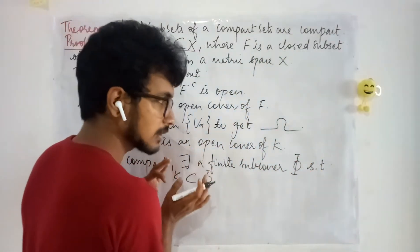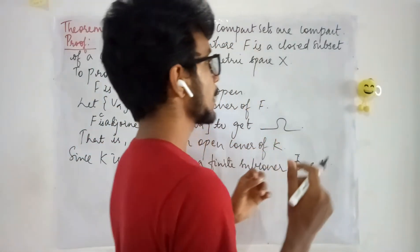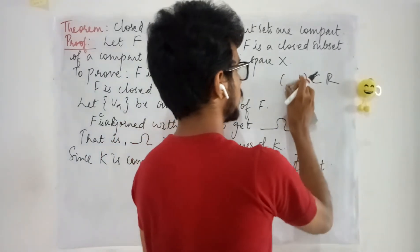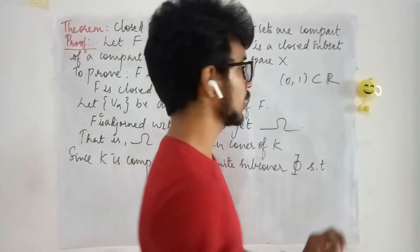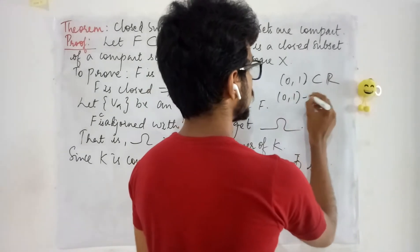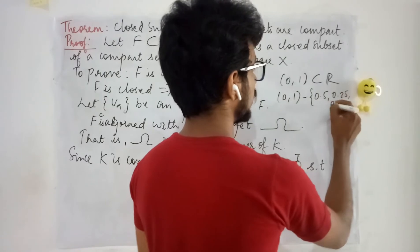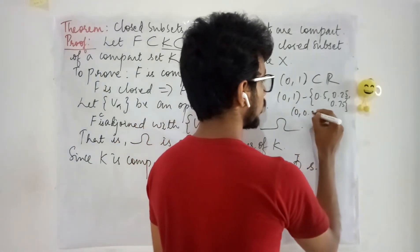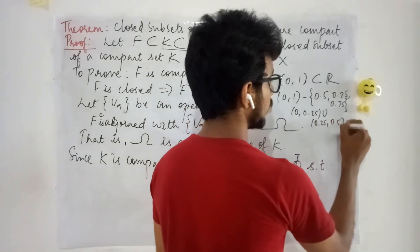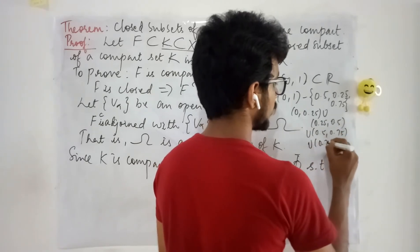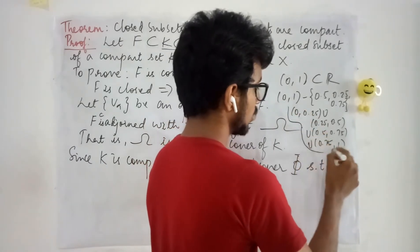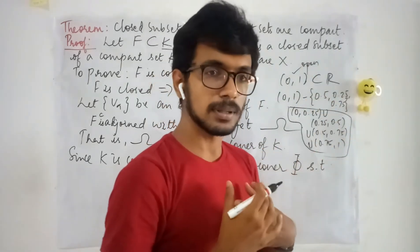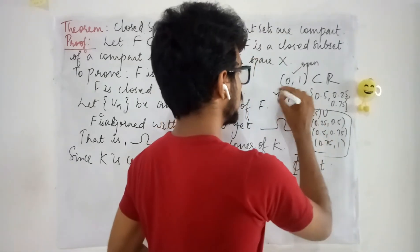Let us take a pause from this theorem and see something in general. Consider the open set (0,1) in R. I am removing some points from it — say 0.5, 0.25, and 0.75. What do I get? I get (0, 0.25) union (0.25, 0.5) union (0.5, 0.75) union (0.75, 1). You can see this is a union of open sets, therefore it is also open.